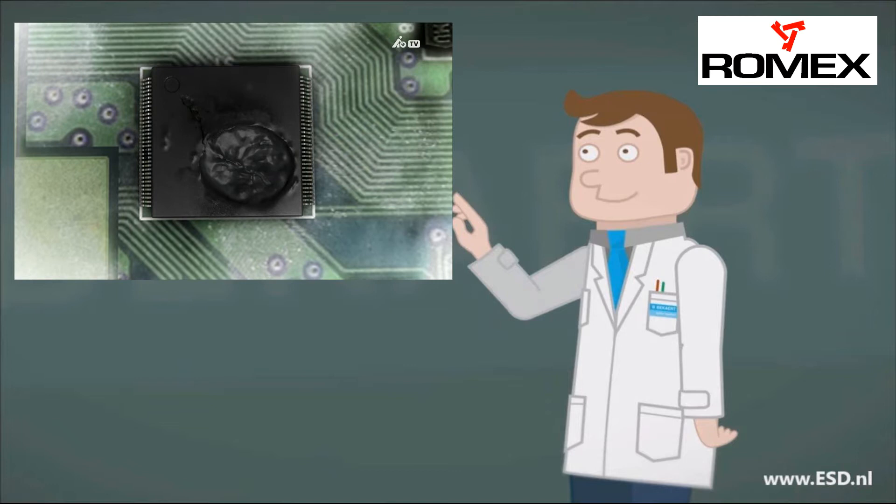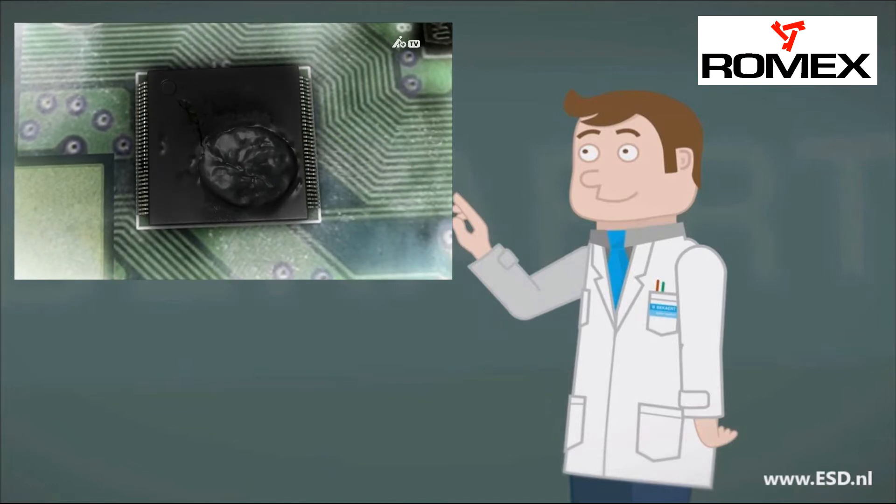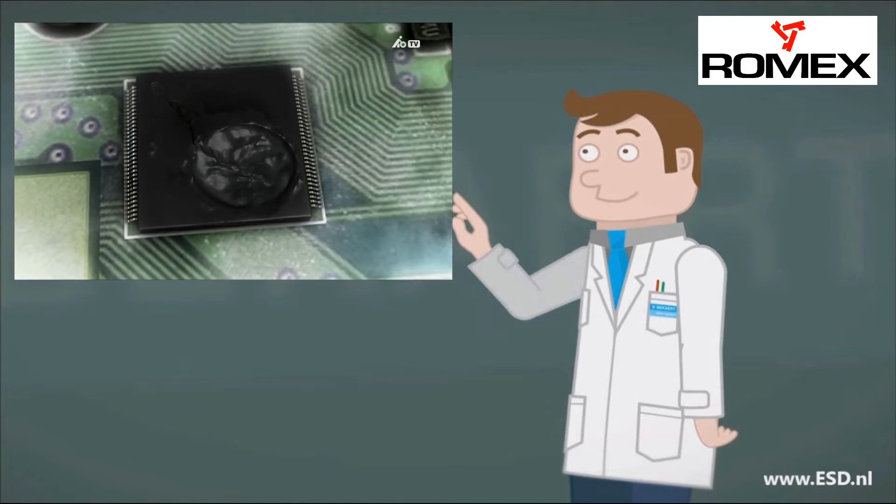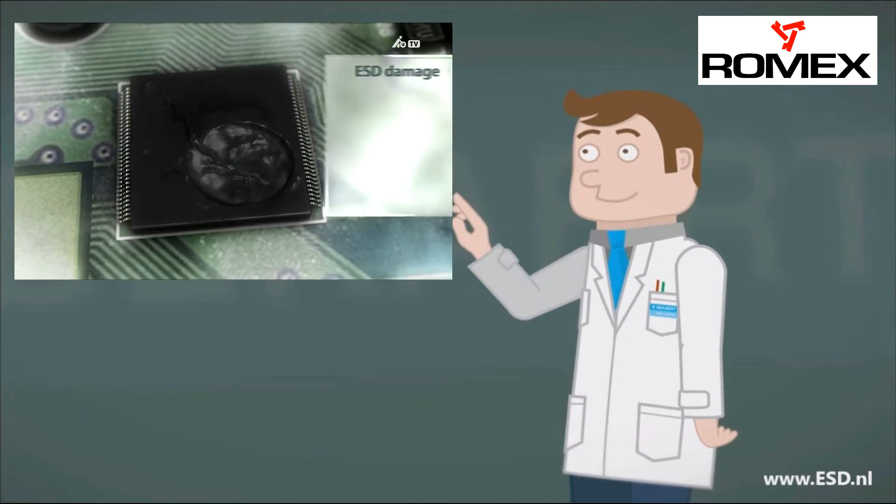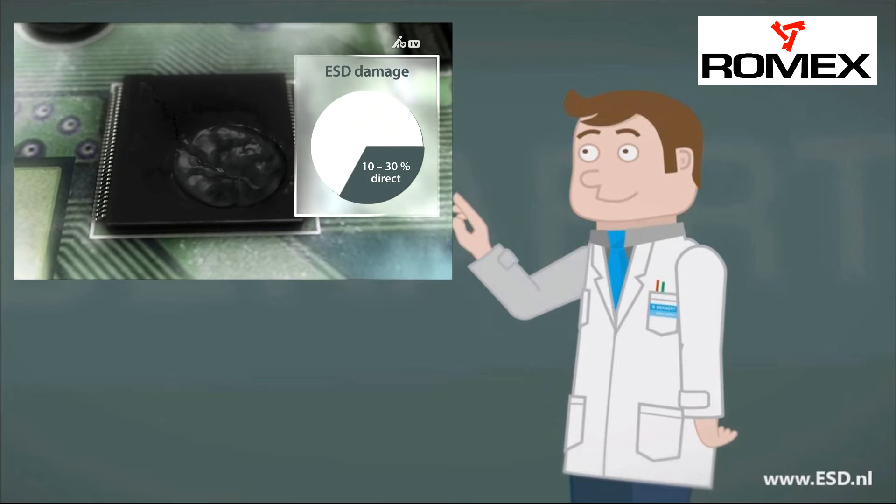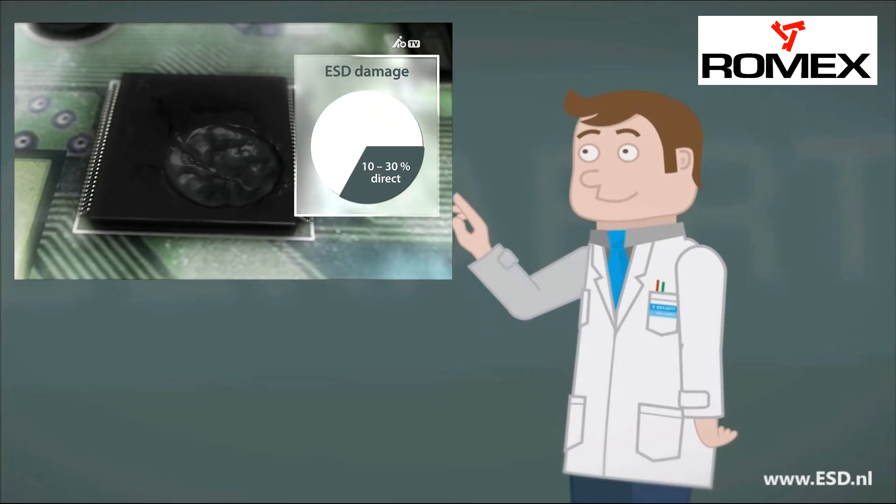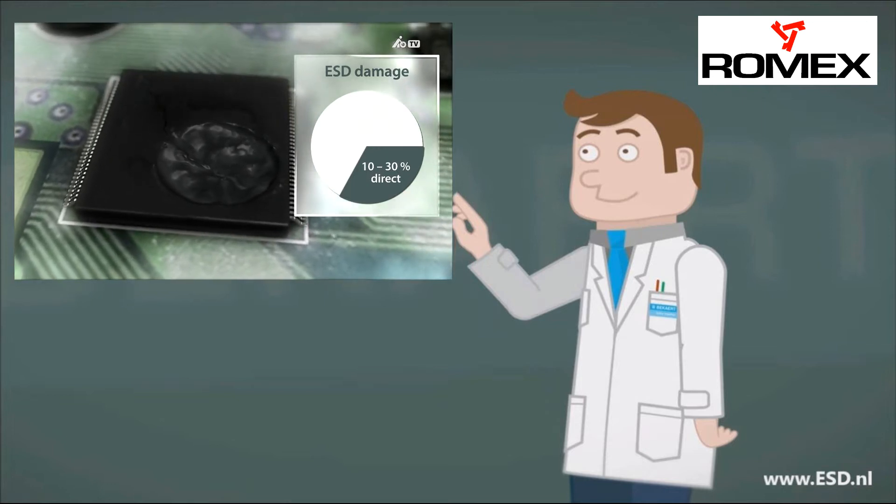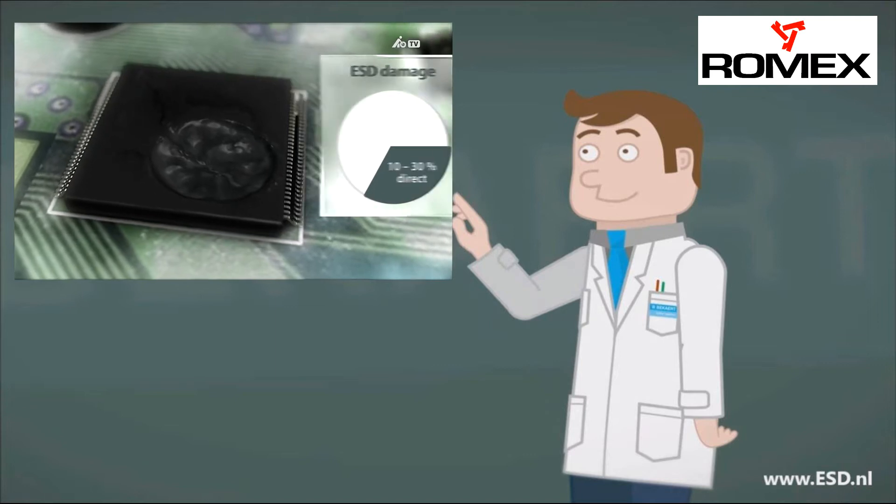With a direct fault, the device is either visibly damaged or its function is impaired. Damage like this can be sustained when taking measurements, for example. However, less than 30% of all damage caused by an ESD event is direct damage. Such faults are relatively easy to identify and can be remedied at a comparatively low cost.